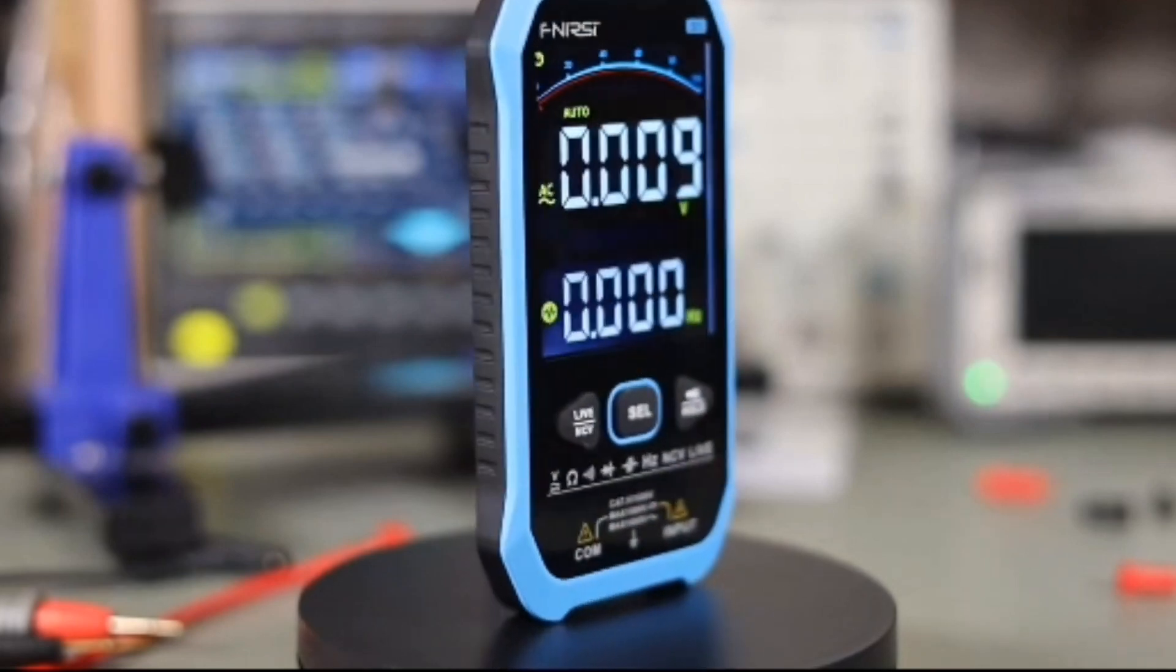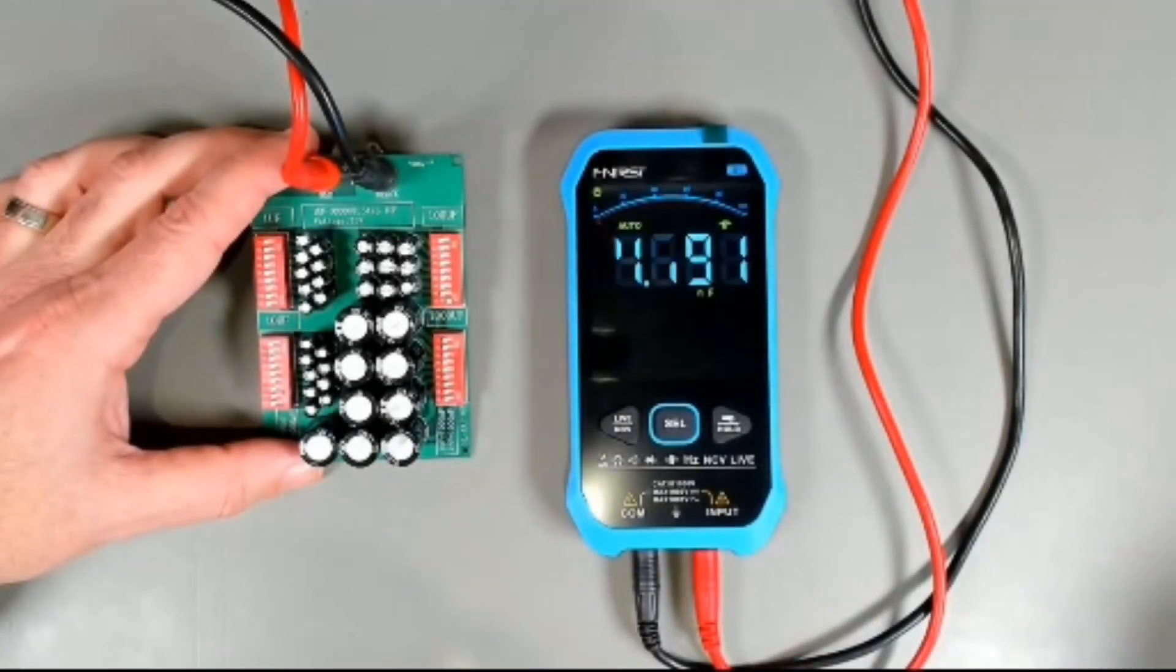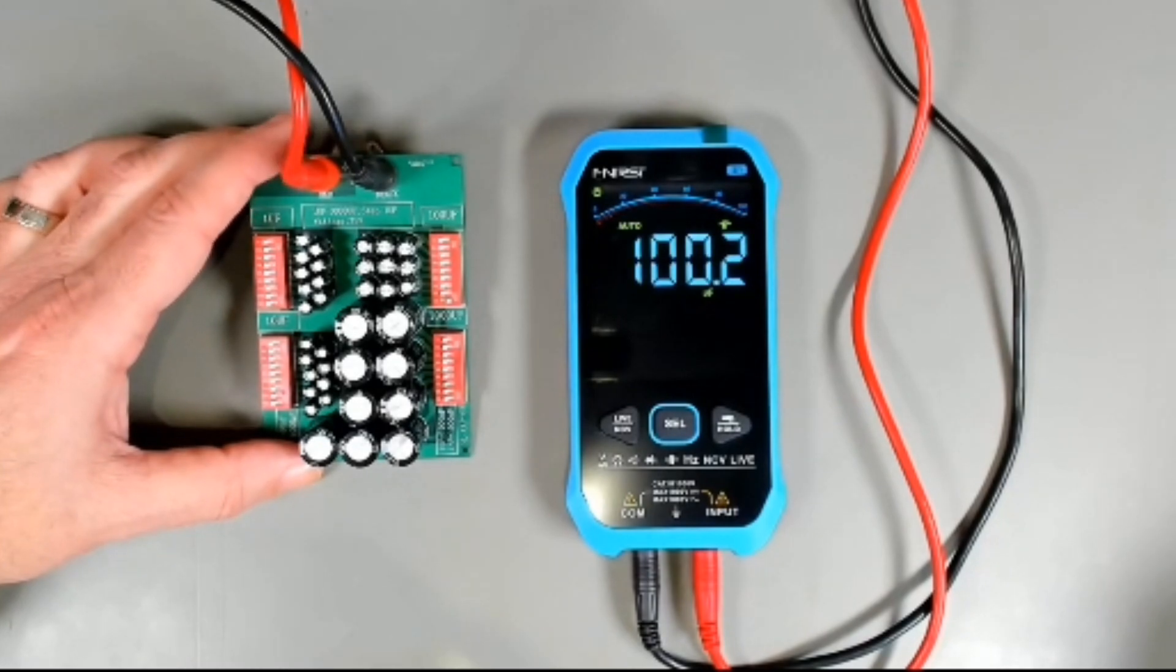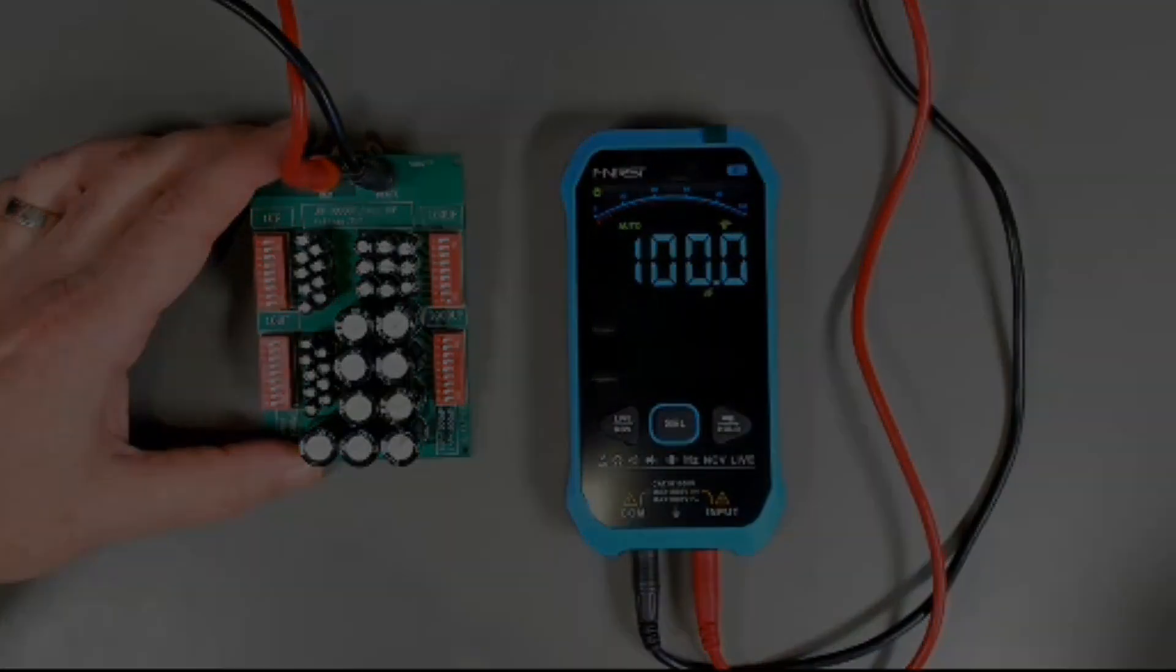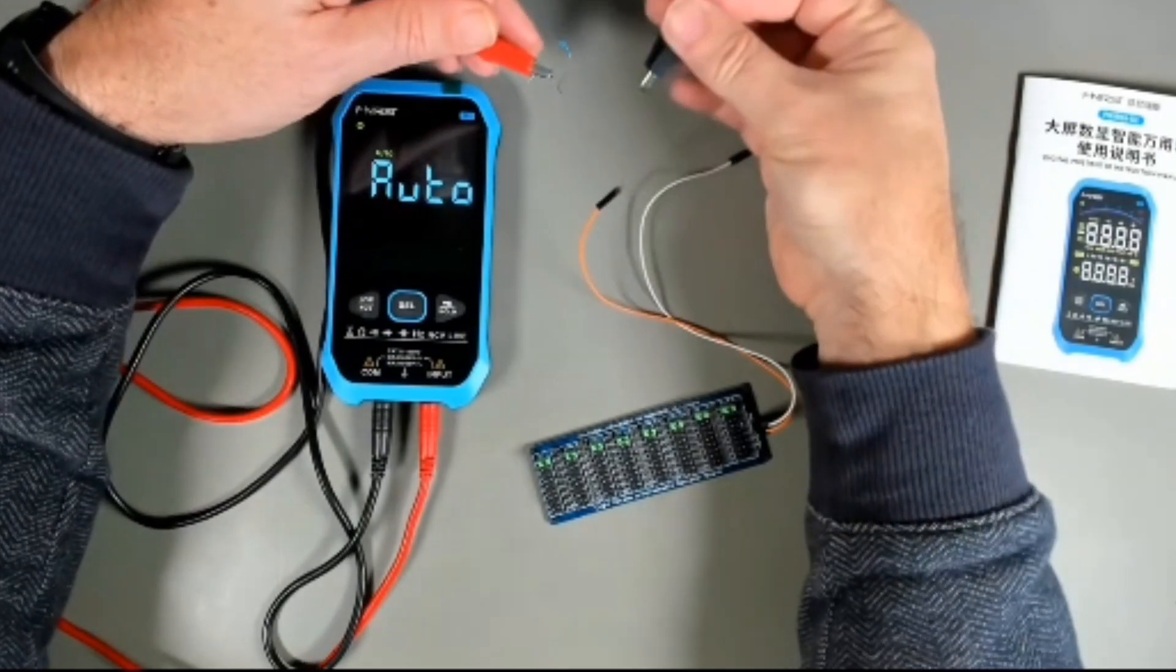When searching for the best digital multimeter, it's essential to consider features that cater to your specific needs. Digital multimeters, or DMMs, are versatile tools used for measuring voltage, current, and resistance. Here are key factors to guide your purchase.